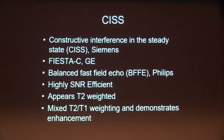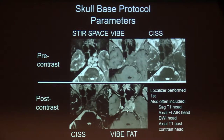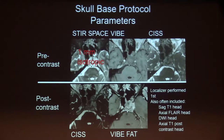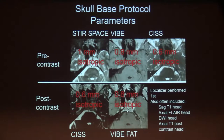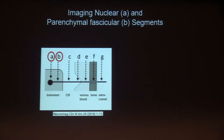CISS stands for Constructive Interference in the Steady State. It has other names on different manufacturer magnets: Fiesta C on GE, balanced fast field echo on Philips. It's highly SNR efficient and appears T2-weighted but has mixed T2 and T1 weighting. We also perform components of our standard head protocol with skull base coverage. The STIR SPACE is acquired at 1 mm isotropic, the VIBE at 0.8 mm isotropic, and the CISS at 0.6 mm isotropic, to allow the greatest degree of anatomic detail, with the same voxel parameters used post-contrast.